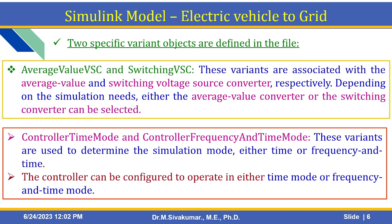The first variant object is the average value voltage source converter, and the second is the switching voltage source converter — average value VSC and switching VSC. These two variants are associated with the average value and the switching voltage source converter respectively. Depending on what the simulation needs, either the average value converter or the switching converter can be selected.